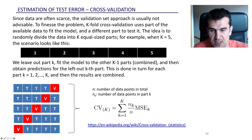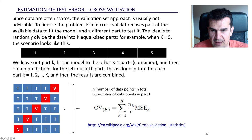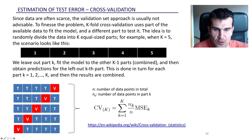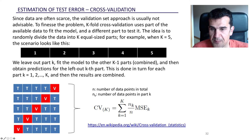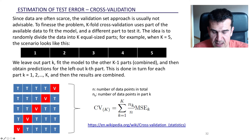The model fitted with those four blocks has never seen the fifth block. We repeat this process, selecting each block as the validation block in each iteration. When we finish, we have five estimates of the error, and we compute the weighted average of those errors — basically summing the errors for each data point in the dataset. As presented here with mean squared error, this is for regression problems.